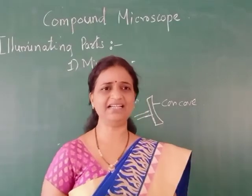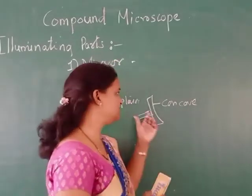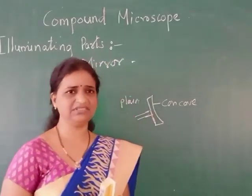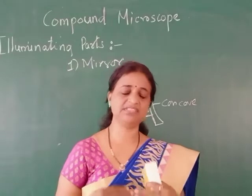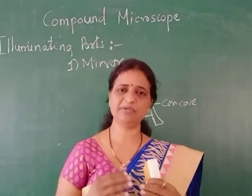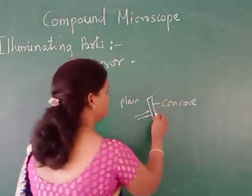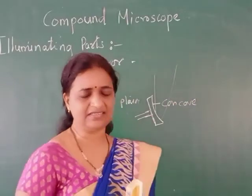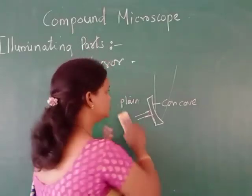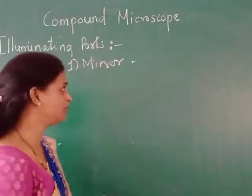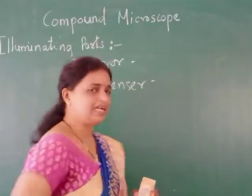You can use the concave side of the mirror with natural light. The function of the mirror is that light rays coming from the source — whether an electric bulb or sunlight — fall on the mirror, and the mirror reflects those light rays towards the condenser. That is the function of the mirror, the first part of the illuminating system of the compound microscope.